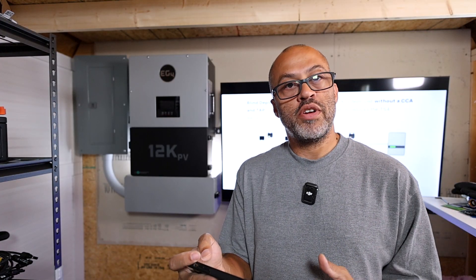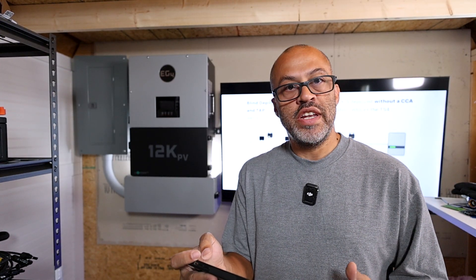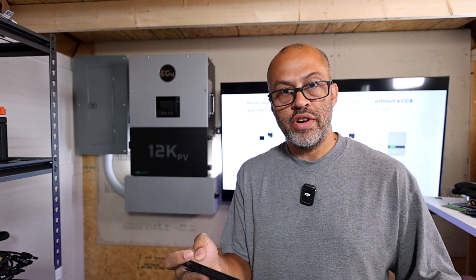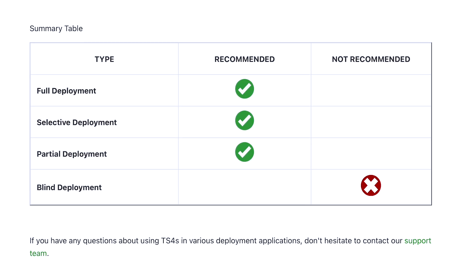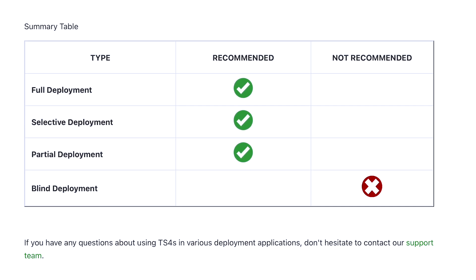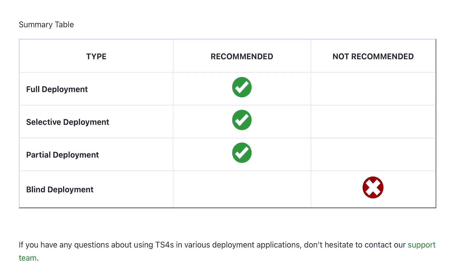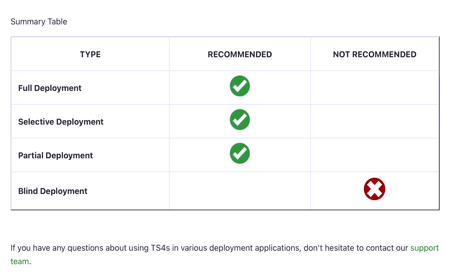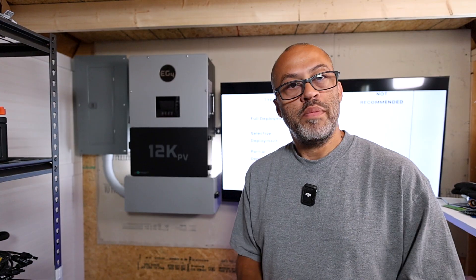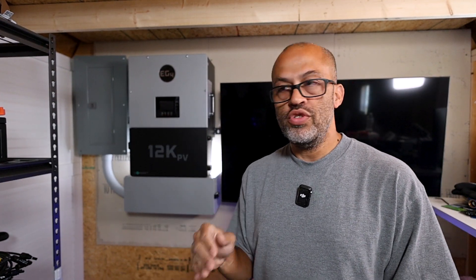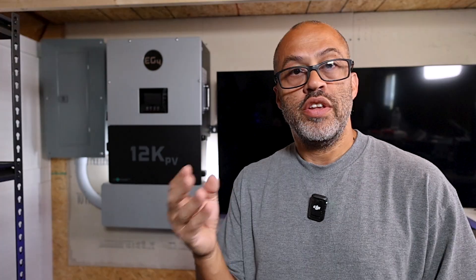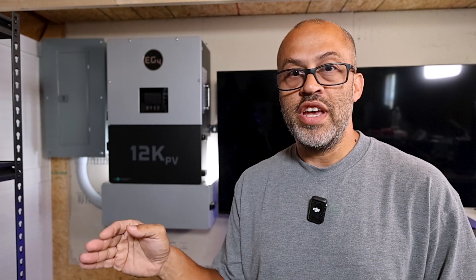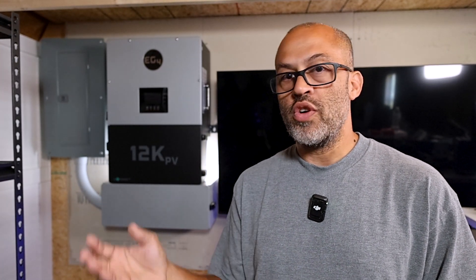With the CCA and TAP you'll be able to communicate, track everything in the Tigo system, and monitor it. They recommend full deployment, selective deployment, or partial deployment, but they don't recommend blind deployment — that takes your warranty down from 25 to five years. For anyone who had questions about whether you could put it on just one or two panels, or whether you needed a CCA and TAP to monitor everything — yes, you can just hook it up and it will just work if you do a blind deployment.